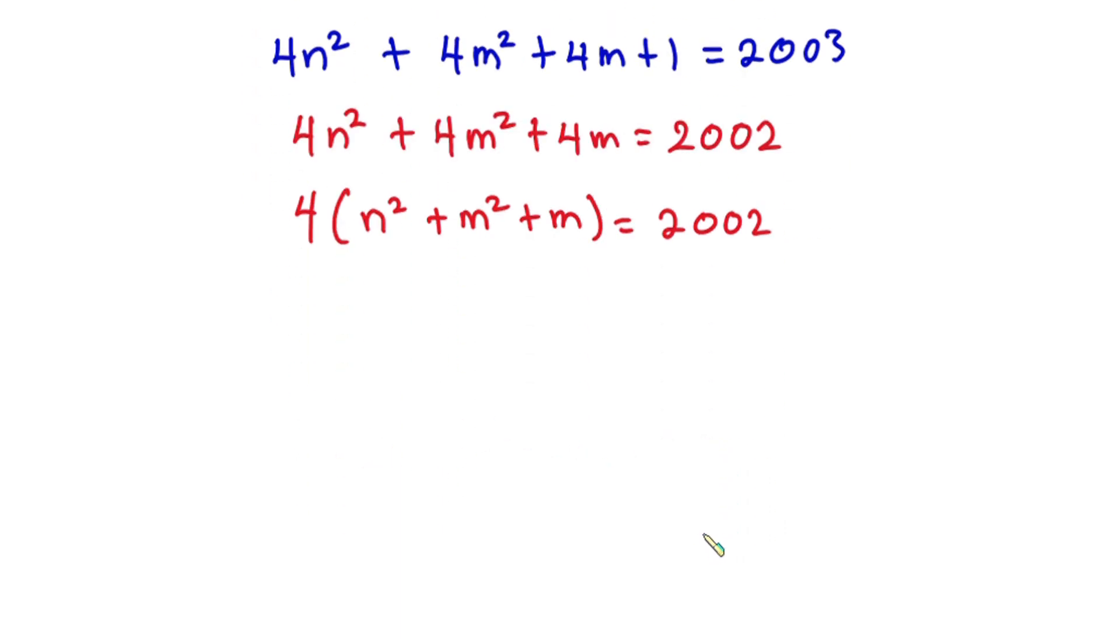Now if you look at this equation very well, you can see that 4 cannot divide 2002 straight away. So what I'm going to do is to divide each side of the equation by 2.